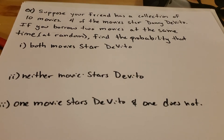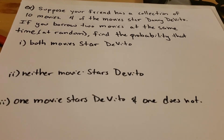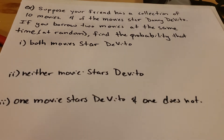We're going to look at a couple more examples on dependent and independent events and conditional probability, because I got a couple of questions about the last homework assignment. This is a question that's similar to one of the questions in the homework that some people are having trouble with.